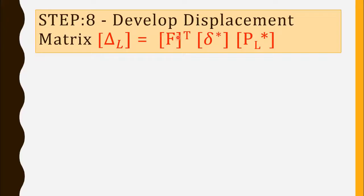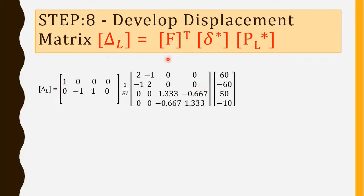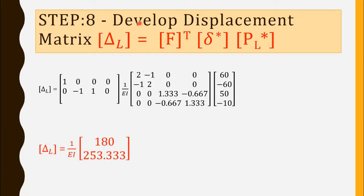The eighth step is to develop the displacement matrix using the equation delta-L equals F-transpose times delta-star times P_L-star. F-transpose times delta-star was already computed in step 7. Multiplying that result by the equivalent joint load matrix P_L-star gives: delta-L equals (1/EI) times [180; 253.33].